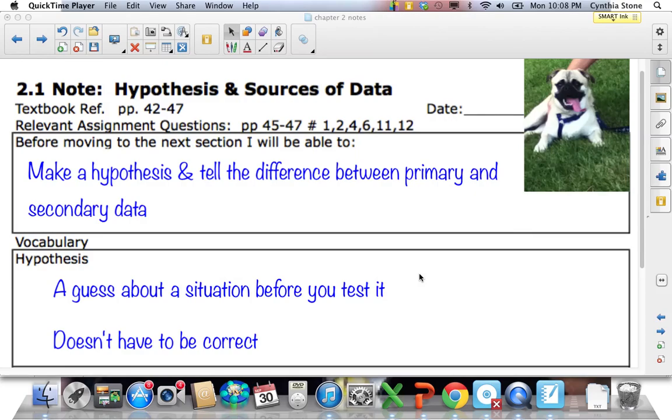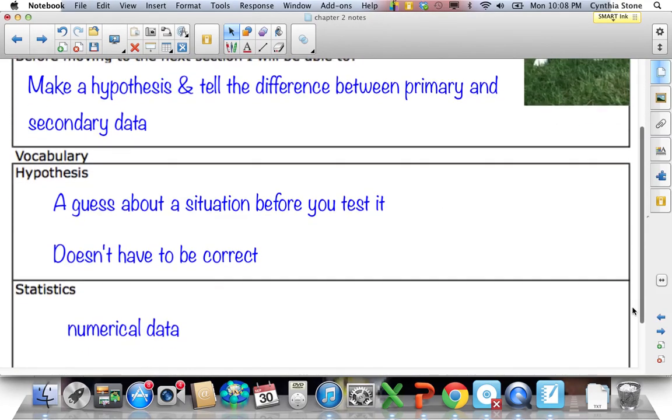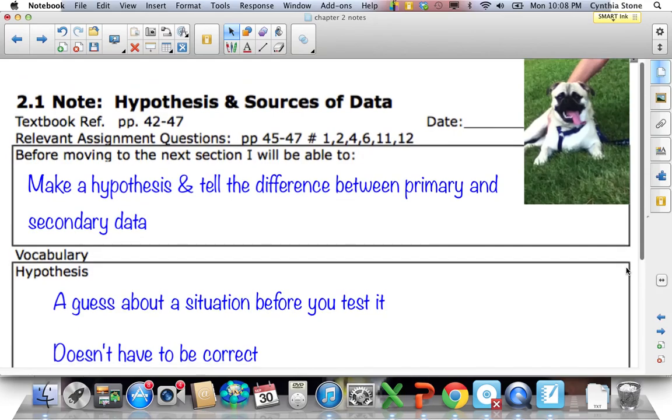But it doesn't have to be something scientific. You could guess somebody's age, that would be your hypothesis. My hypothesis is that Charlie is 2 years old. It doesn't have to be correct and the test could be just asking his owner, like me, how old he is. And he's not 2, he's 4. But he looks young for his age and he acts young too.